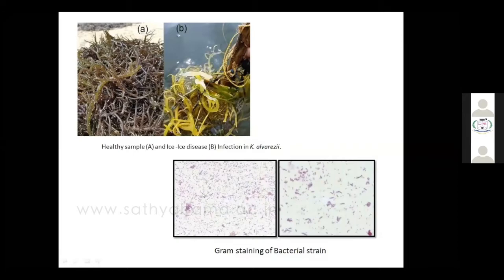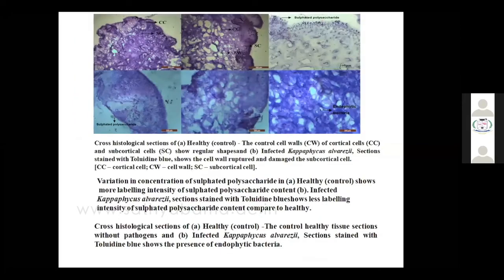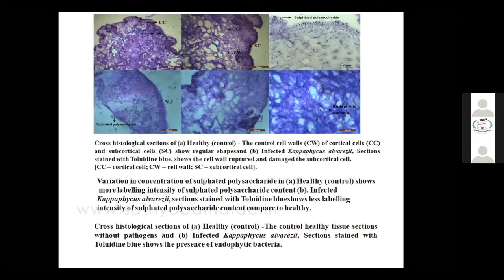We sectioned it and went for staining studies. We got gram-negative and gram-positive bacteria, which are involved in the formation of ice-ice disease. In the histopathological studies, the bacteria leads to the reason for formation of ice-ice. It may degrade the sulfated polysaccharides and also degrades the cell wall polysaccharides. In the first two figures, you can see sulfated polysaccharides in the healthy sample, but in the diseased one, you can see disintegrated polysaccharides. On the right side, you can see bacterial presence in this cell — some endophytic bacteria are also present. This histopathological section proves that some bacteria are present in the thallus, responsible for ice-ice disease formation.